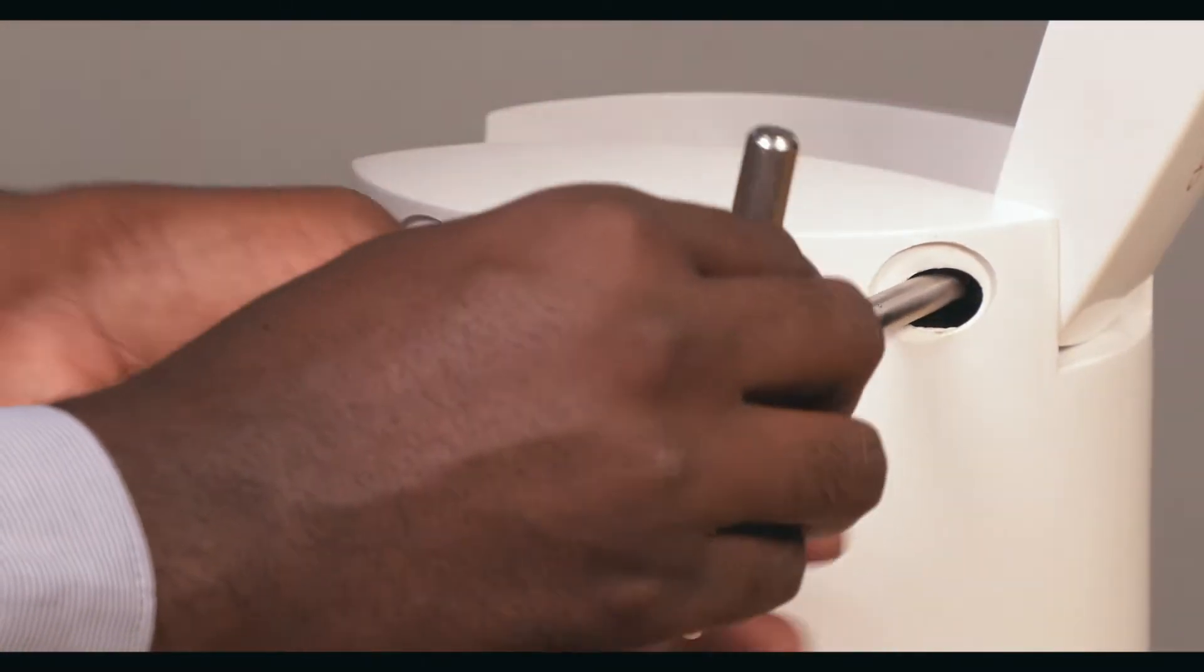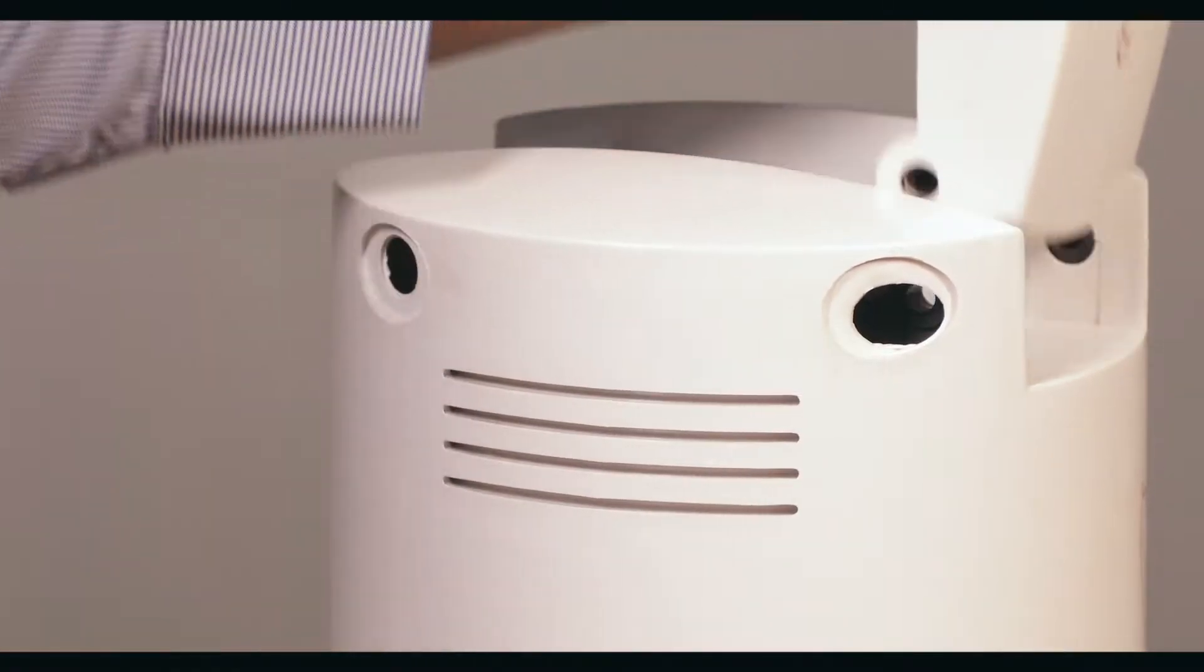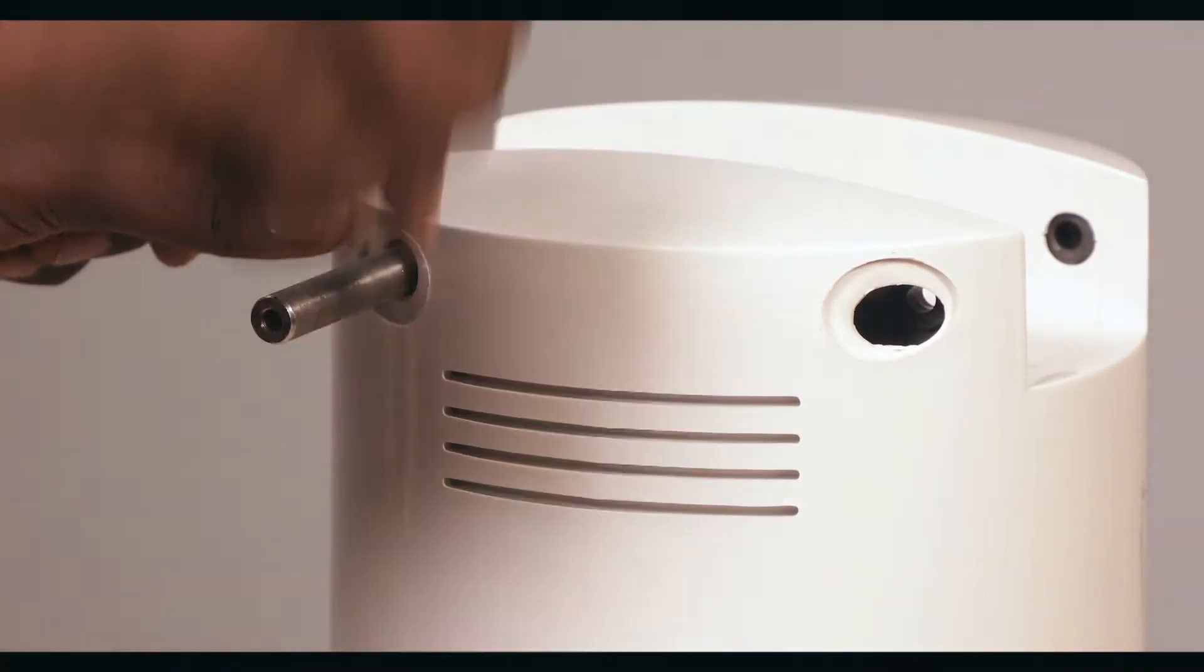Using a T-spanner or a nose plier, remove the hinge pin followed by the arm channel. Then, remove the lock pin.